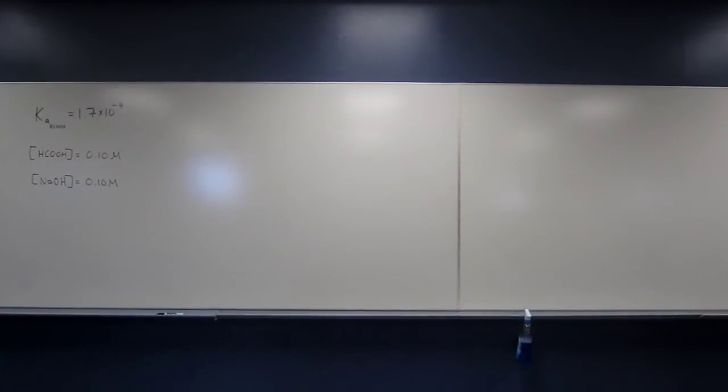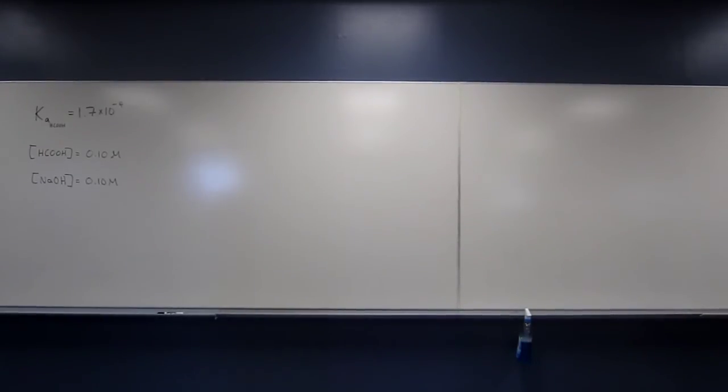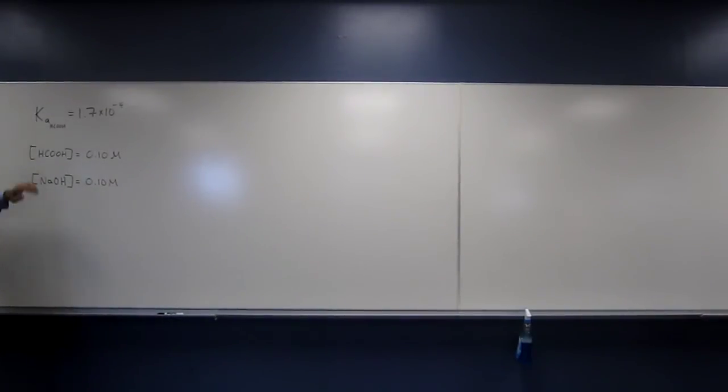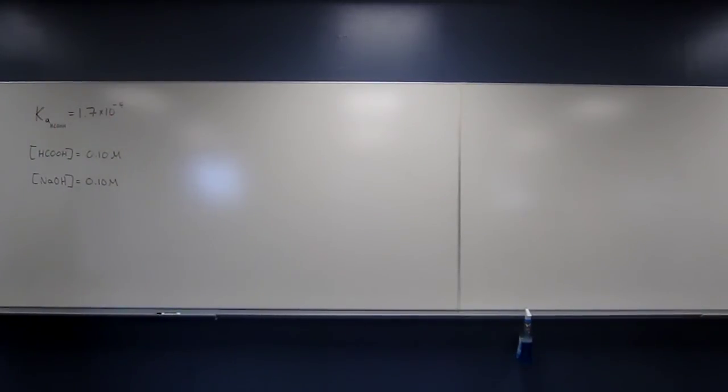So let's try this one. It says, calculate the pH at the equivalence point for the following titration, 0.10 molar formic acid versus 0.10 molar sodium hydroxide. So I've written all the pertinent information up here. We've got the Ka from the Ka table.